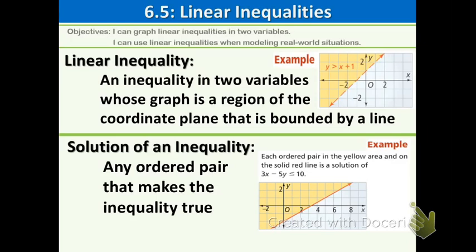Let's begin by talking about what a linear inequality is. It is an inequality in two variables whose graph is a region of the coordinate plane that is bounded by a line. As you can see, there is a picture on the top right — that is a linear inequality, and you can see that it is dashed and shaded above. I will explain in just a few moments how we do all of that.